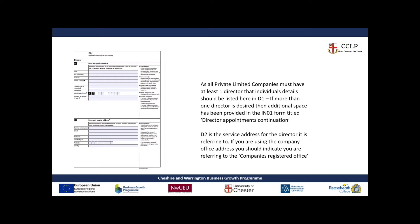Following on is D1 and D2 — director appointments. Every limited company must have at least one director; public limited companies will need two, but for private limited companies you must have at least one. The director's details — title, full name, country of residence, nationality, date of birth, and business occupation if they have one — must be included in D1. D2 is the director's service address, which doesn't have to be their usual residential address; it can be the office or place of company, but there does need to be an address which will be posted on Companies House.